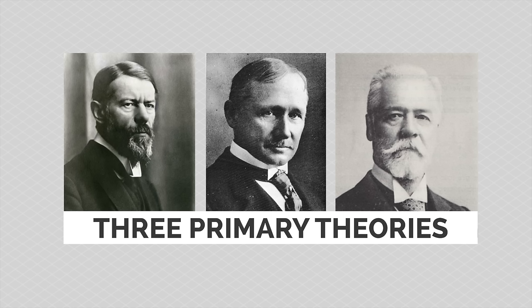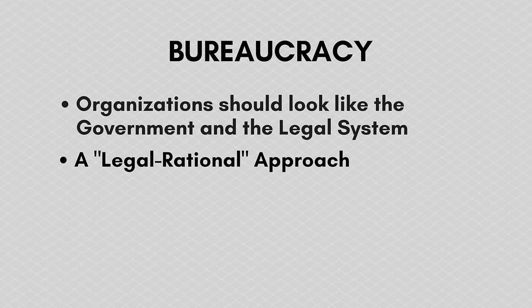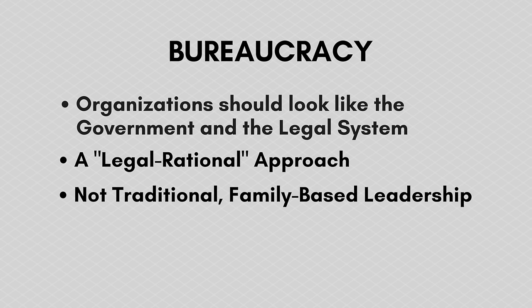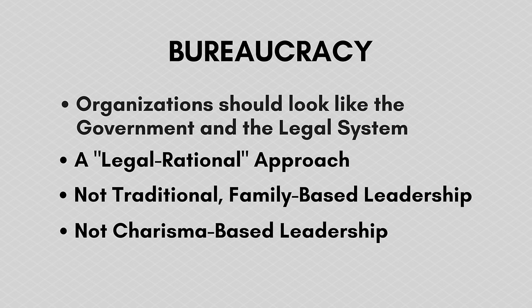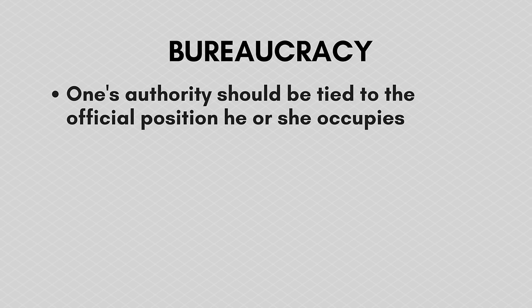When we talk about these three, we're talking about the founding fathers of classical management theory, and these are the three names you're going to see in most textbooks on the topic. Max Weber is most known for the term bureaucracy, which to him meant that organizations should look like an extension of government and the legal system. He wanted a legal, rational approach to organizing — he didn't want to follow the traditional family-type system where the head of the family was in charge, or a charismatic-type leader. He thought these were not the right way to run large organizations, and he wanted authority tied to each person's official position in the organizational hierarchy.